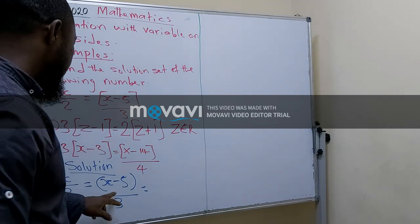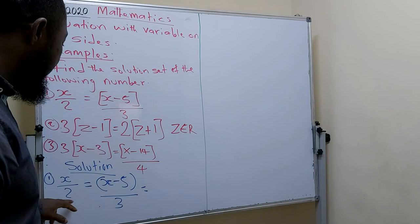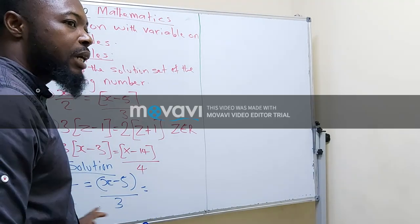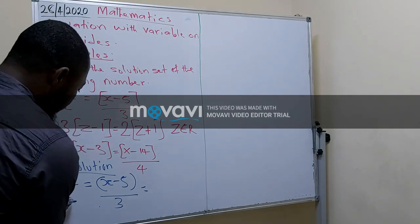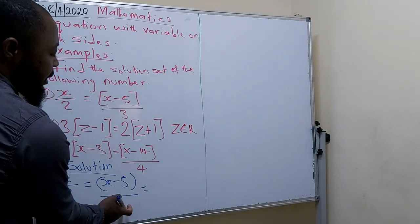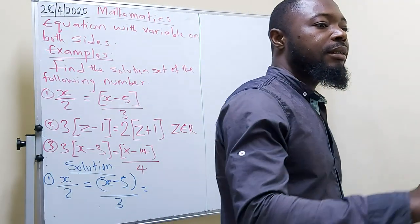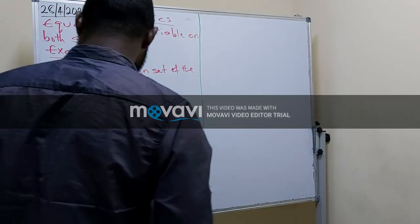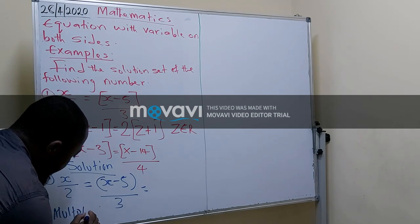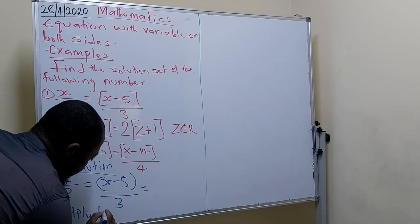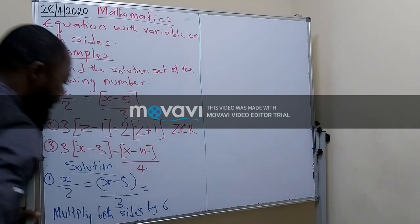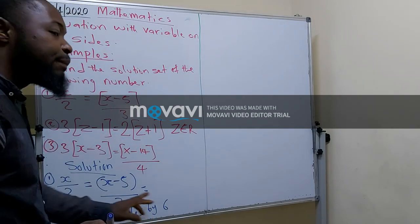Here, we need to find the LCM of both sides — the LCM of the denominators 2 and 3. We multiply 2 by 3, that is 6. So 6 is the LCM of both sides. We multiply both sides by 6. Since 6 is the LCM, we say: multiply both sides by 6.